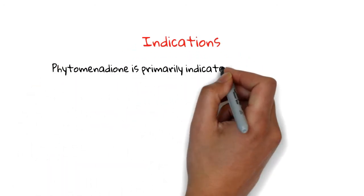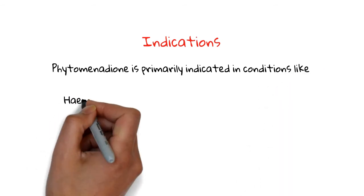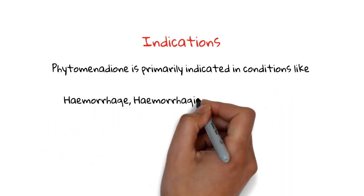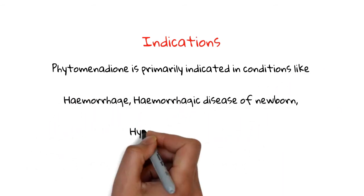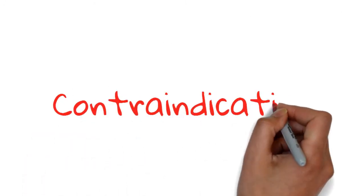Phytomenadione is primarily indicated in conditions like hemorrhage, hemorrhagic disease of newborn, and hypoprothrombinemia.